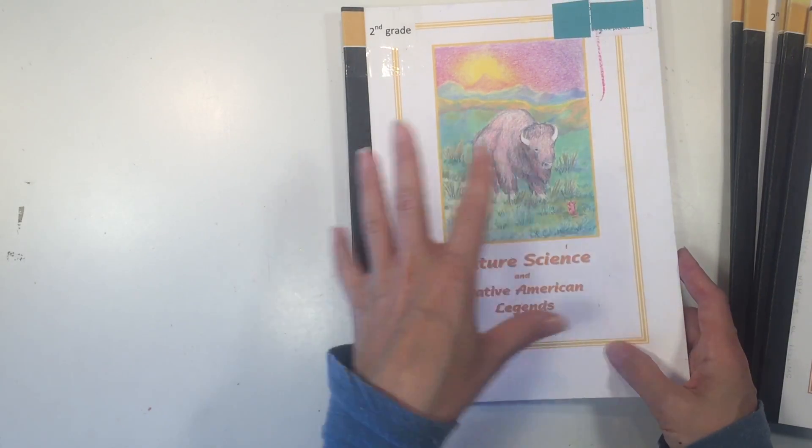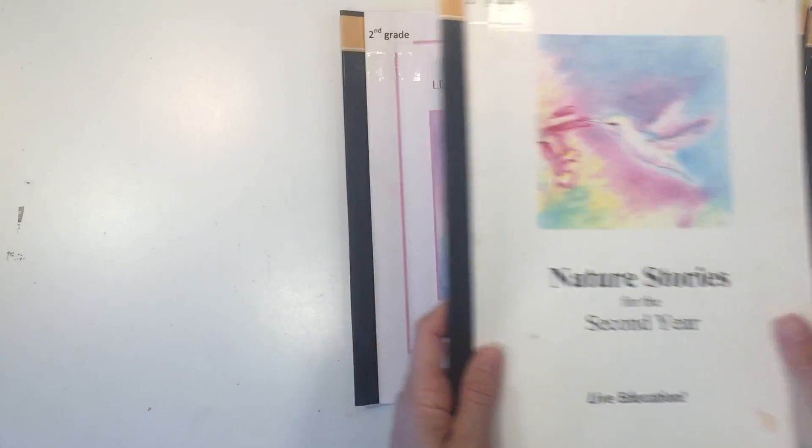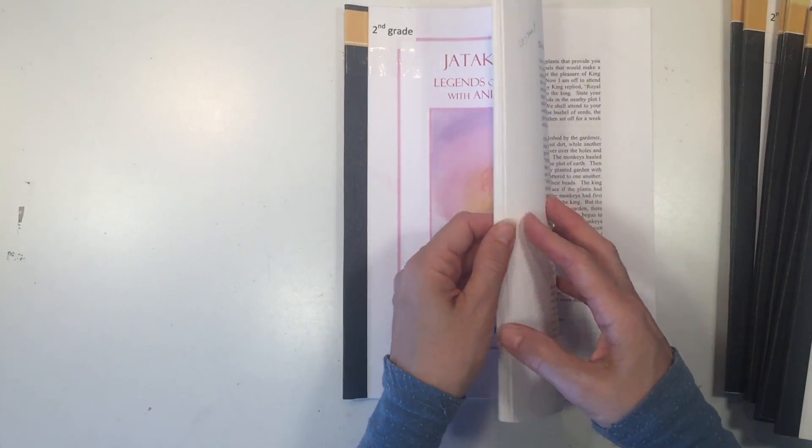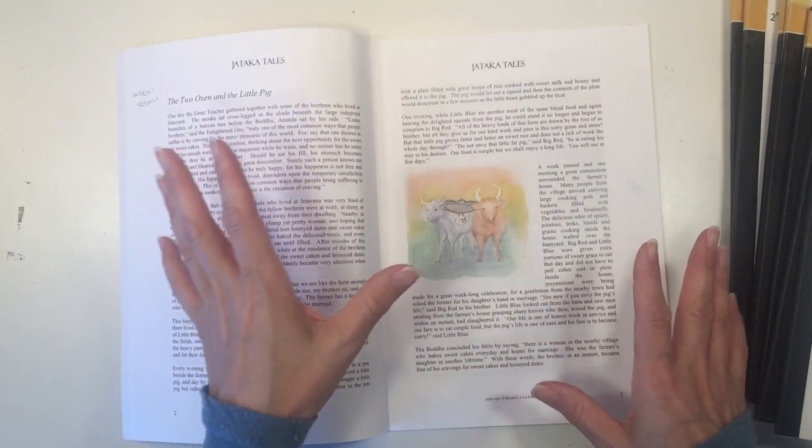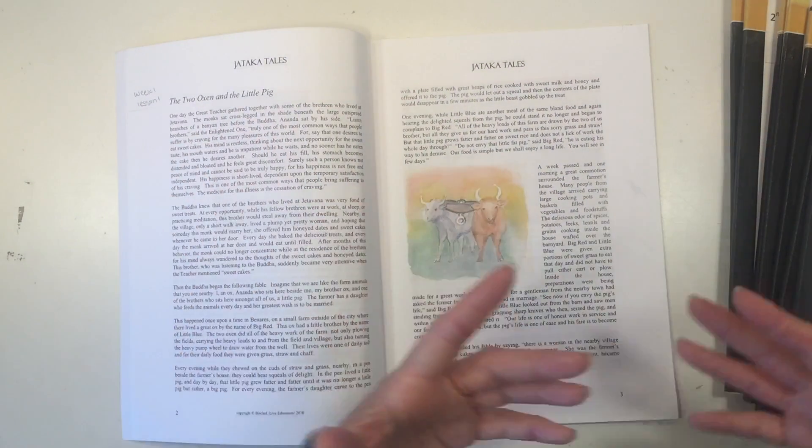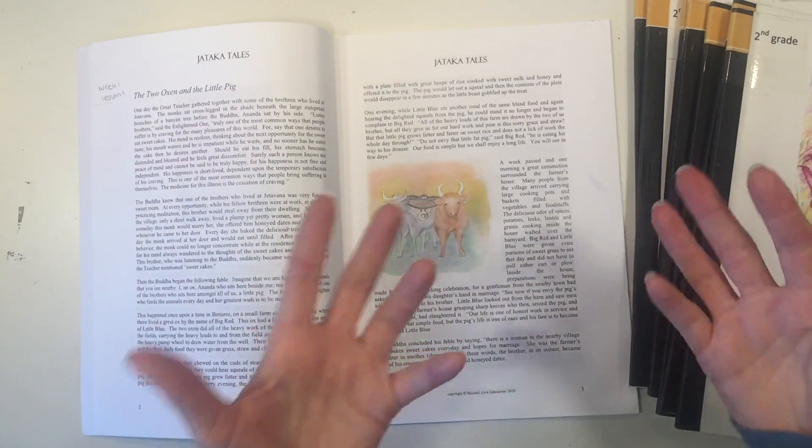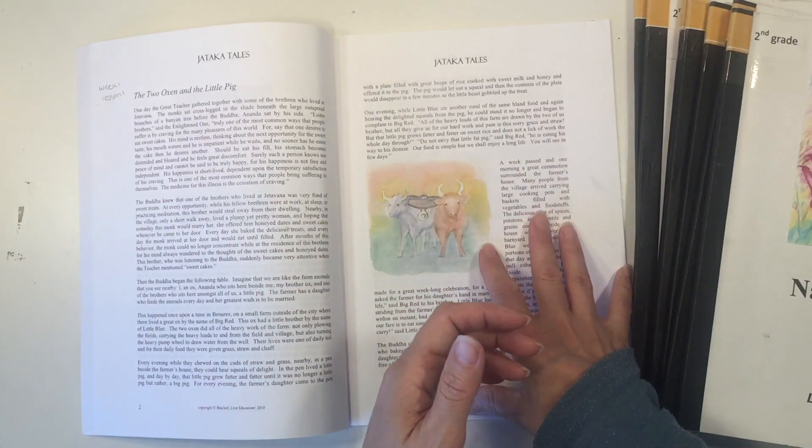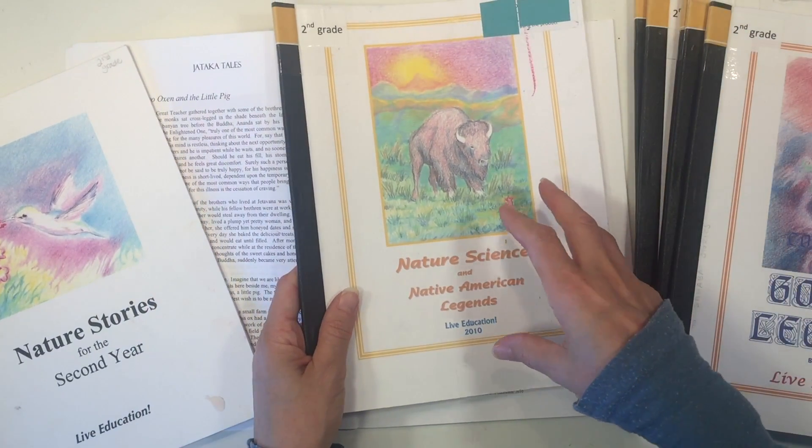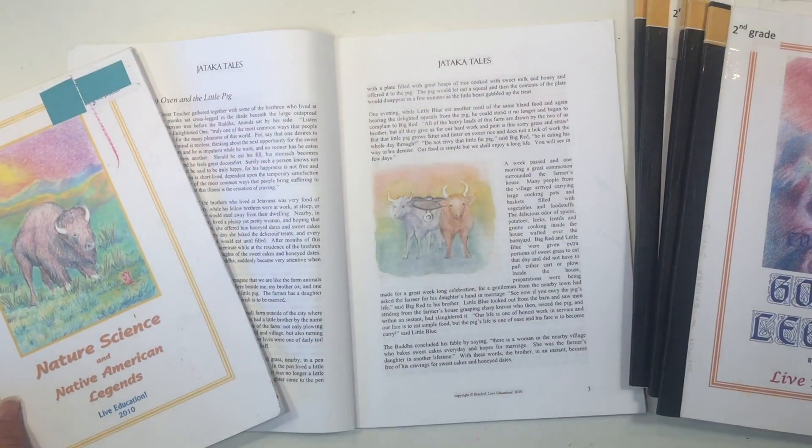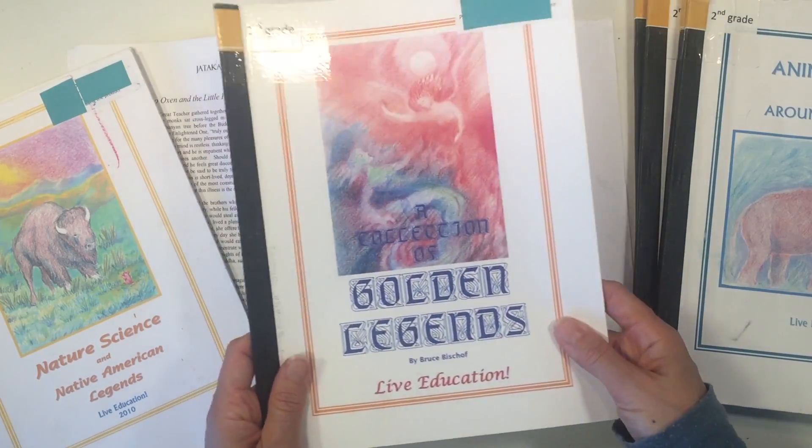So you have Native American culture mixed in with your nature science. And then you're also going to have your legends of the Buddha with animal fables. And so you're getting quite a variety when it comes to your stories from different cultures and different time periods. And that's going to be the basis of the curriculum where all the other subjects are going to be drawn out of these stories. So you're going to have your nature science coming from your Native American tales. You're going to have your writing and composition and grammar coming from your golden legends. So I really like the way that this curriculum has integrated those different subject areas together.